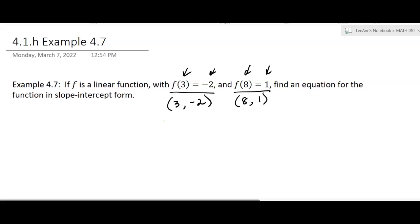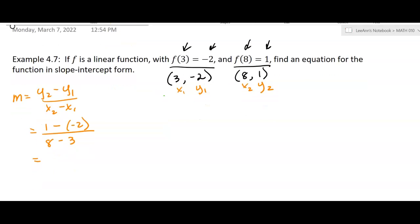Okay, so we can now find the slope. There's the formula for slope, and I'm going to make this x sub 1, y sub 1, and x sub 2, y sub 2. So that's going to give me 1 minus negative 2 over 8 minus 3. I feel like we already did this slope. I get 3 over 5 for the slope.